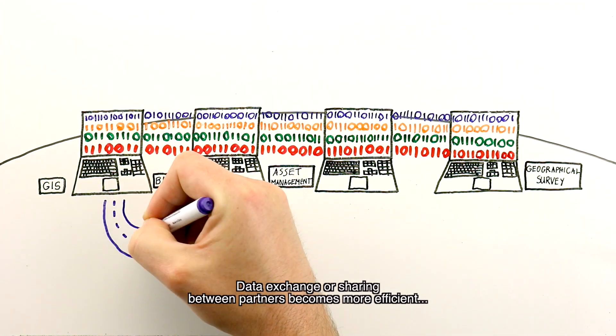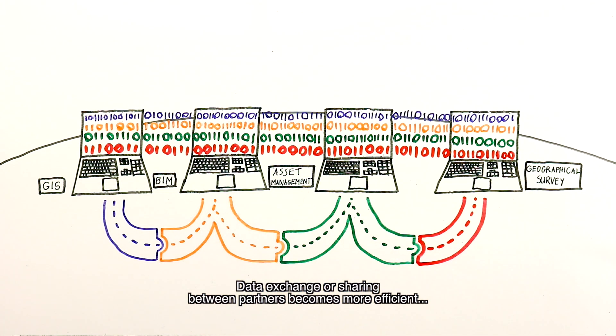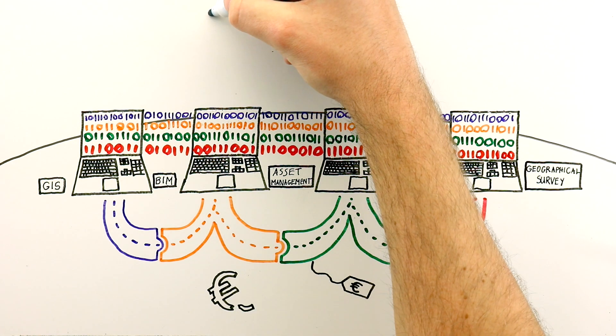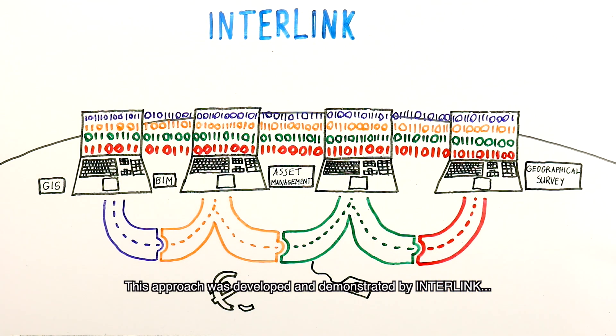Data exchange or sharing between partners becomes more efficient, which leads to fewer failure costs and better affordability of national roads. This approach was developed and demonstrated by Interlink, a consortium of market parties and research institutes focused on this issue.